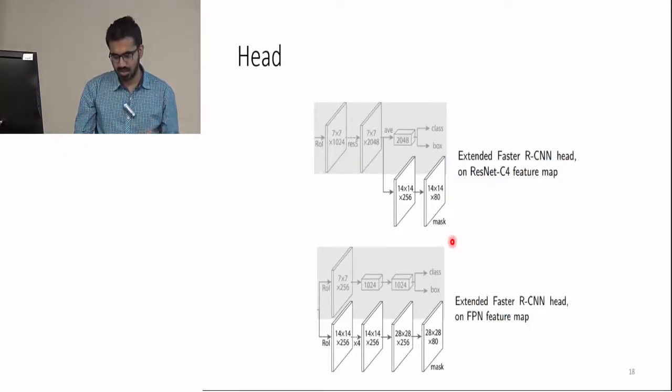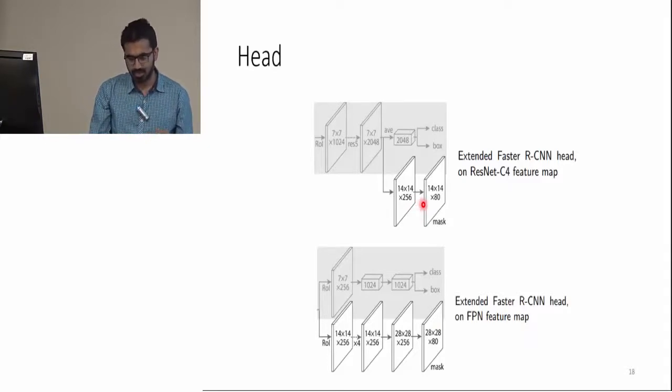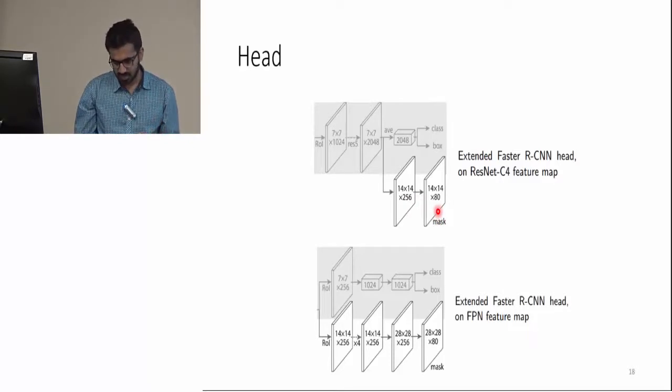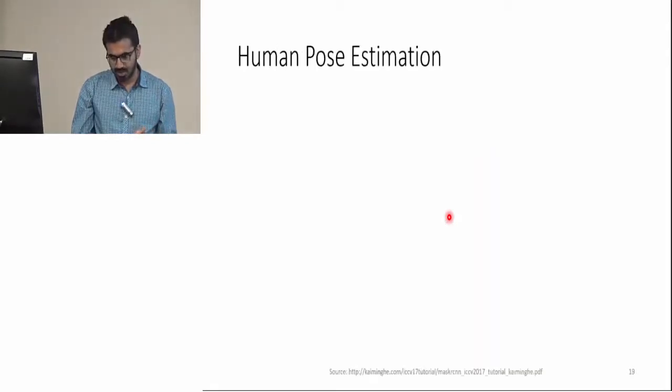These are the two network heads used in this paper. The grayed-out regions here are the classification and bounding box layers, and these layers are responsible for predicting the mask. These two architectures were introduced in Faster R-CNN paper; they just extended it for mask prediction.